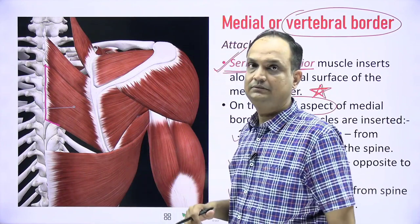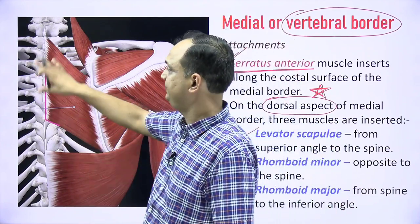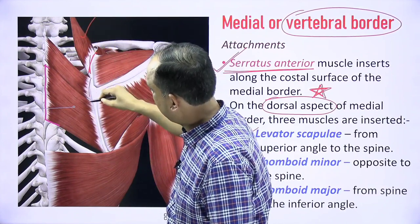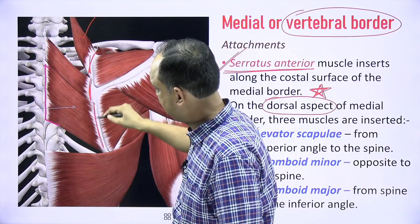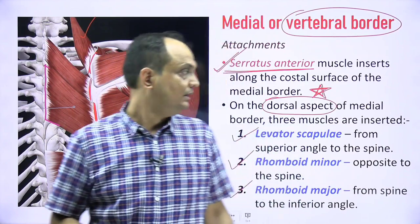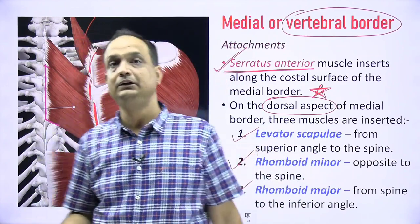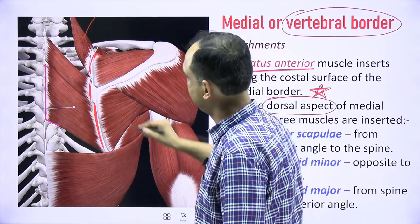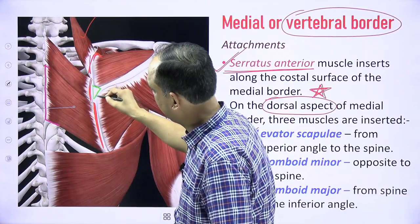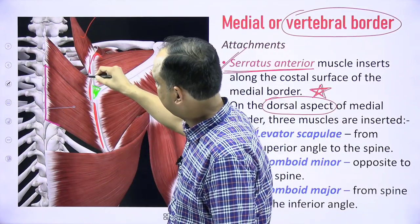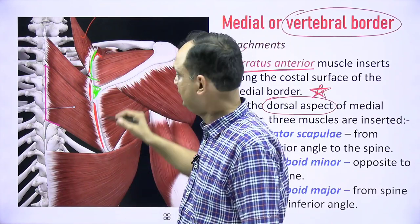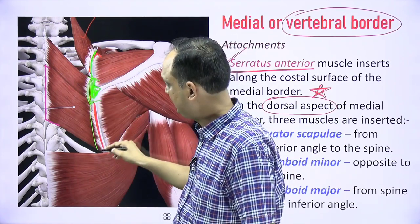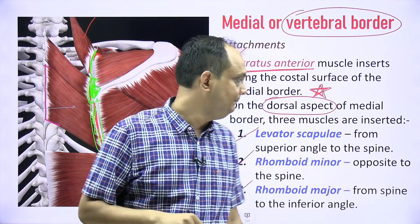In dissection after removing the trapezius, you can see levator scapulae, rhomboidus minor, and rhomboidus major. Levator scapulae attaches from the superior angle to the spinous process. Below the superior angle is the root of the spinous process with a flat triangular area. Above that is the attachment of levator scapulae. Against this root is the attachment of rhomboidus minor, and below that is the attachment of rhomboidus major.